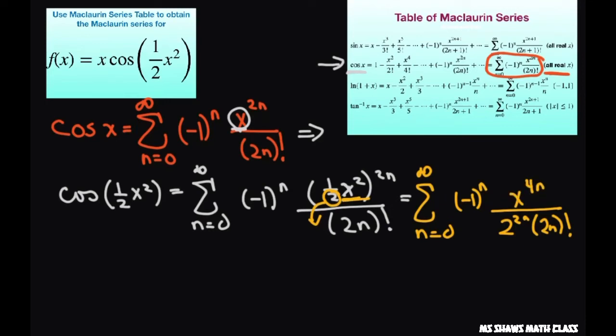Alright, but what we really have is x times cosine of one half x squared.